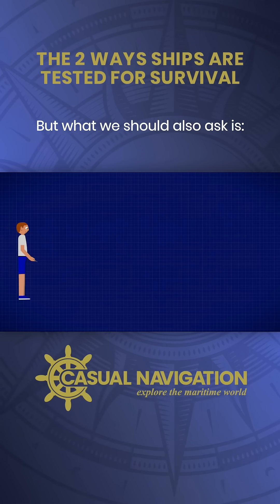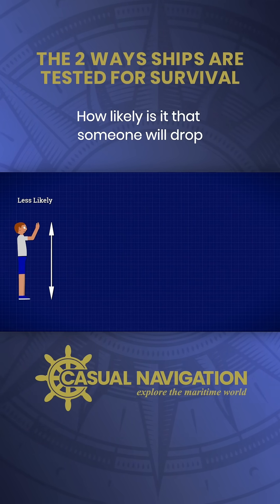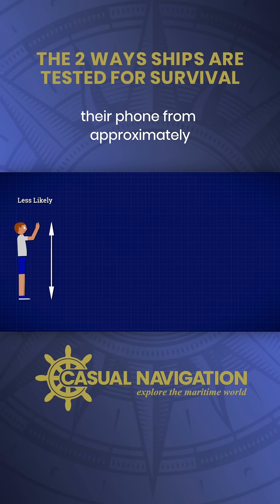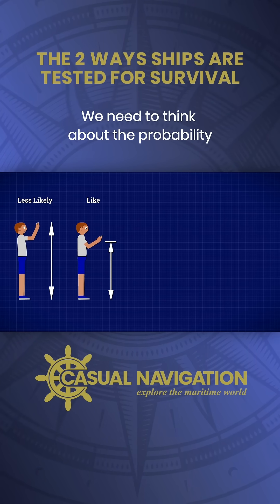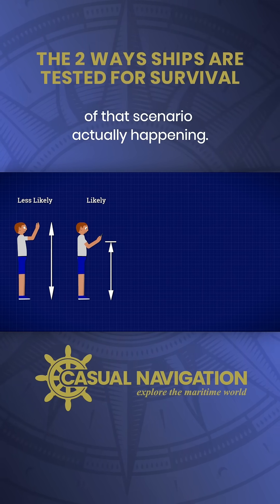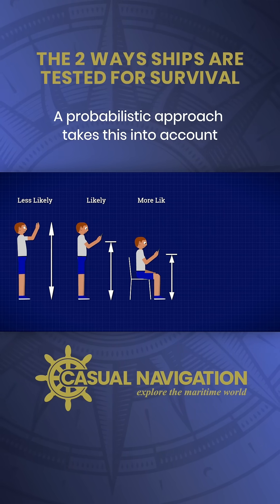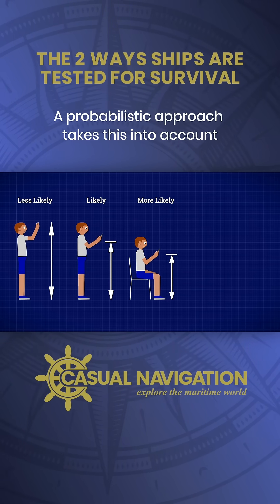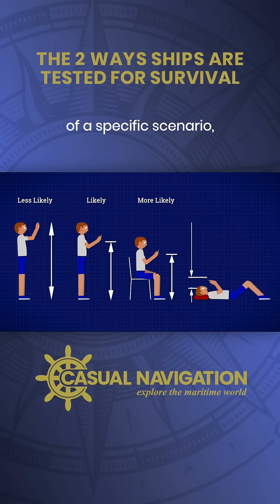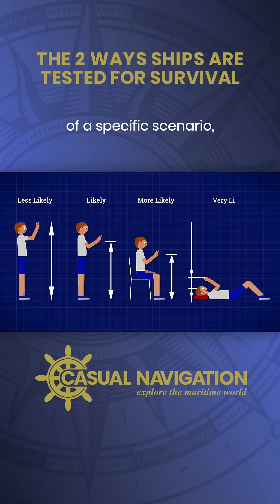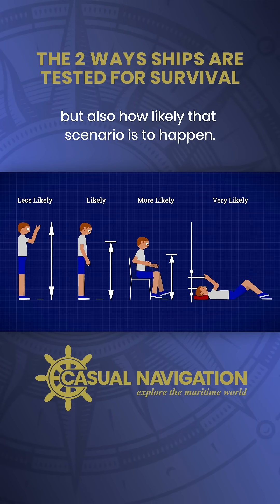But what we should also ask is, how likely is it that someone will drop their phone from approximately 5 feet in the first place? We need to think about the probability of that scenario actually happening. A probabilistic approach takes this into account by looking at not just the outcome of a specific scenario, but also how likely that scenario is to happen.